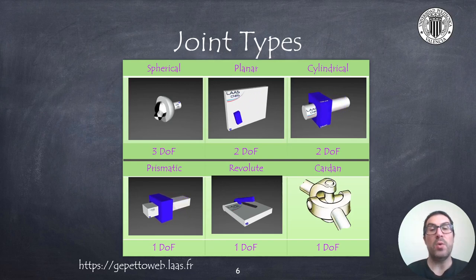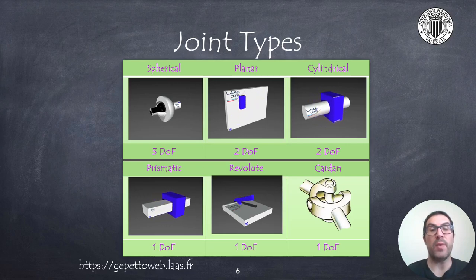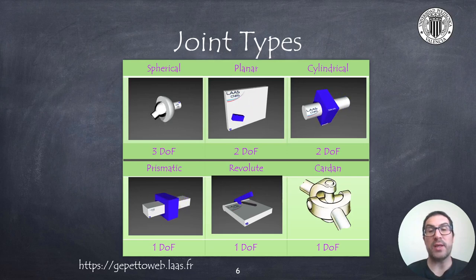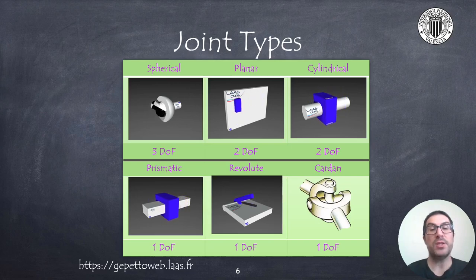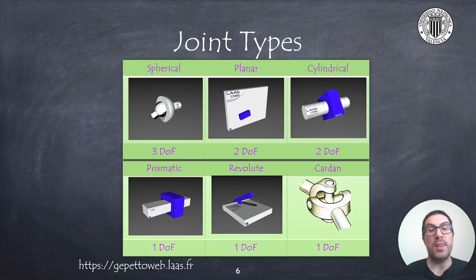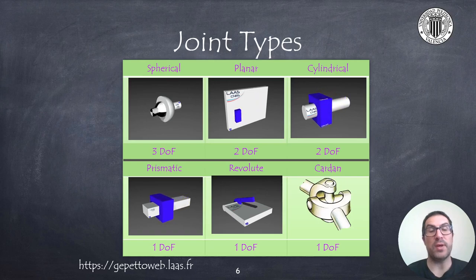On the other hand, we have joints that only have one single degree of freedom. This is the case of prismatic and revolute joints, and these are the most common types of joints in robotic systems. I would also like to mention that the Cardan joint allows one degree of freedom and is a special type of joint used in universal joints. By using two of them, the universal joint has 2 degrees of freedom that allow us to transfer motion from one axis to another axis in a different direction.